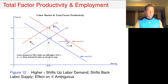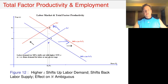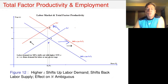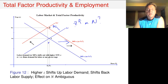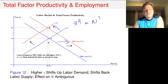Just for your information, it turns out that economists have been asking precisely this question: what is the effect of higher Z on hours worked? The theory, which is ambiguous, turns out to be pretty close to what we find in the data — nobody quite knows what the effect is.